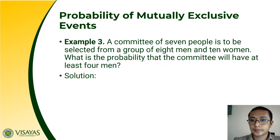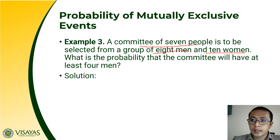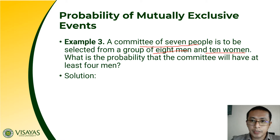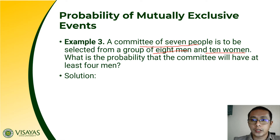Example 3: a committee of 7 people is to be selected from a group of 8 men and 10 women. What is the probability that the committee will have at least 4 men? At least means the minimum number of men is 4, so it could be 4, 5, 6, or all 7 men. I want you to try solving this problem, and after which I will show you the solution.